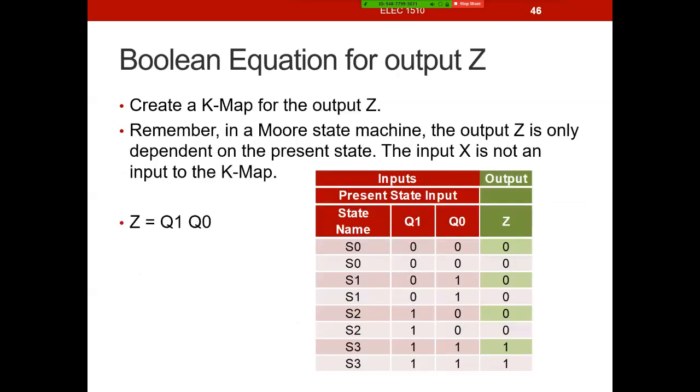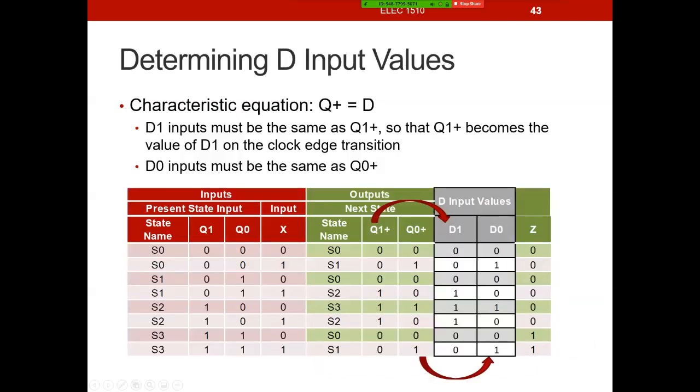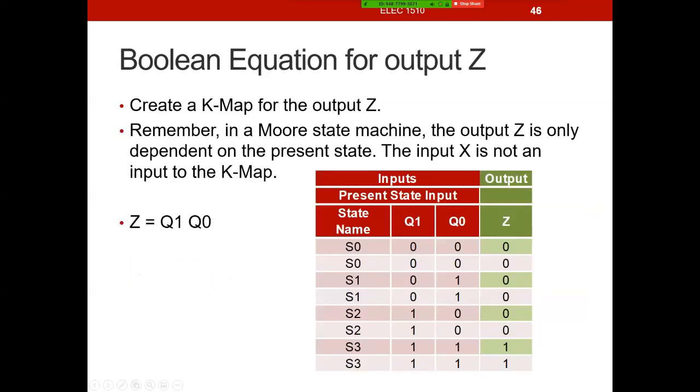Now we also have Z. So we've derived then, we have three outputs. If you think about it, this state table, we have three outputs. We need to derive an equation for D1, an equation for D0, and an equation for Z. Z then, here's Z. We're going to use these as our inputs. So that's where this slide comes from. Here's Z.